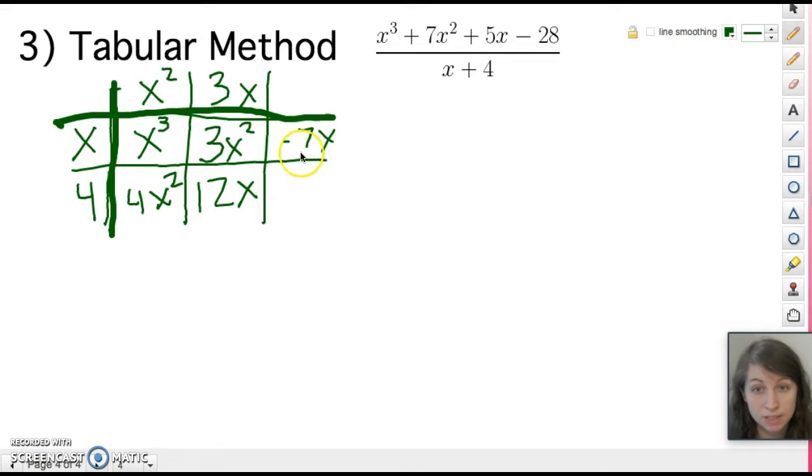And again, our grid is working the same way. So x times what equals negative 7x? We'll put a negative 7 there. Now we can fill in this cell. 4 times negative 7 is negative 28. We look back here and we have 12x and minus 7x is 5x. So we've got that taken care of. And then minus 28, minus 28. So there is no remainder with this. And our answer is this top part. Once again, x² + 3x - 7.